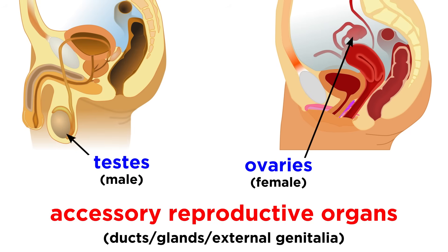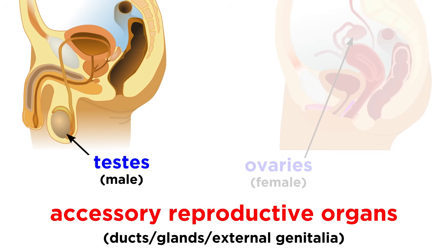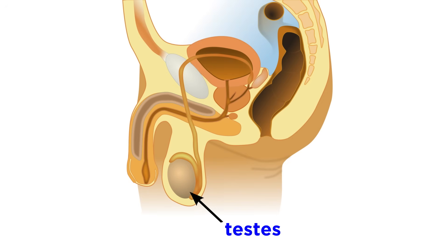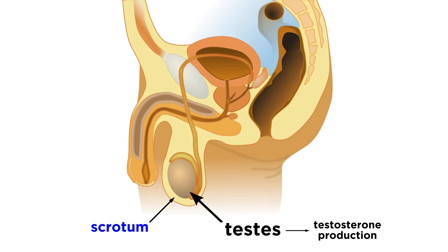There are also accessory reproductive organs, which include a number of ducts and glands, as well as the external genitalia. Since the reproductive system is the only system that varies dramatically between males and females, it is best to examine each separately, so let's start with the male reproductive system. The primary sex organ in males is the testes, which is where testosterone is produced, and these are housed in a sack of skin called the scrotum, which is divided by a midline called a septum.